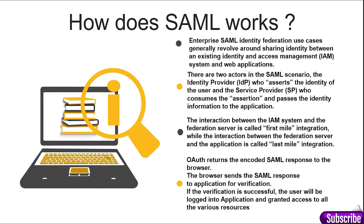How does SAML work? Enterprise SAML identity federation use cases generally revolve around sharing identity between an existing identity and access management system and web applications. There are two actors in the SAML scenario: the identity provider, who asserts the identity of the users, and the service provider, who consumes the assertion and passes the identity information to the application. The interaction between the IAM system and the federation server is called first mile integration, while the interaction between the federation server and the application is called the last mile integration.